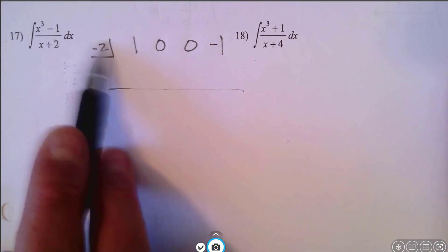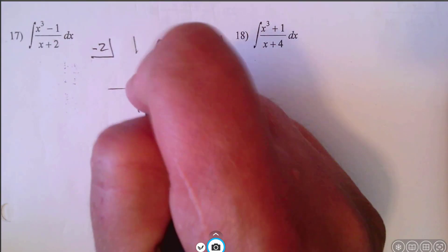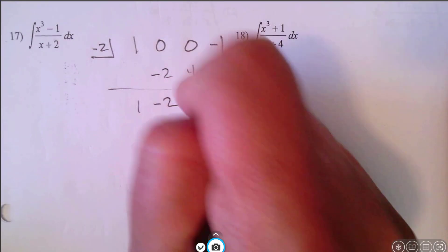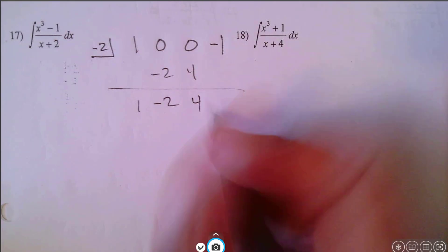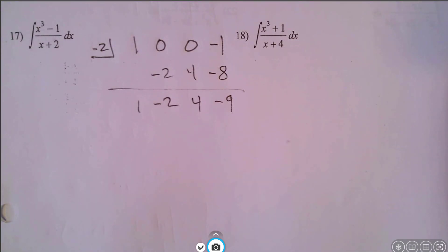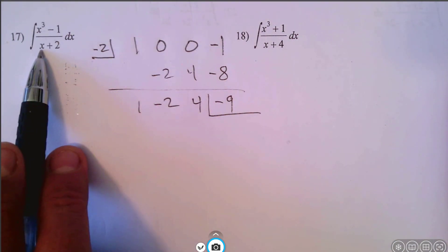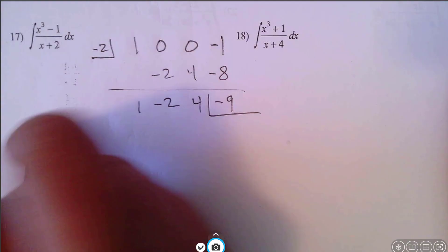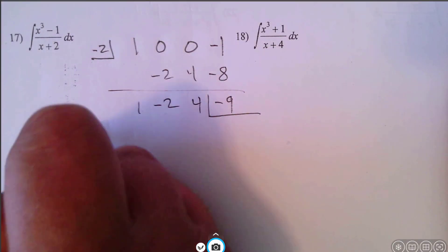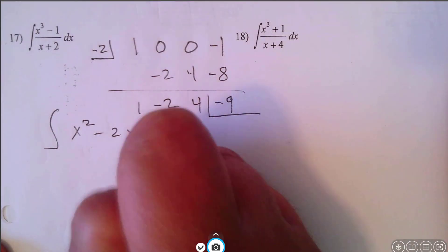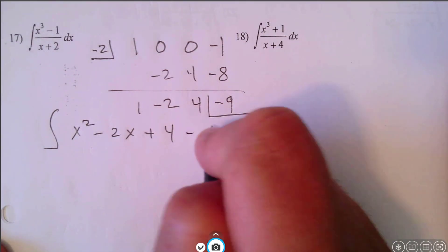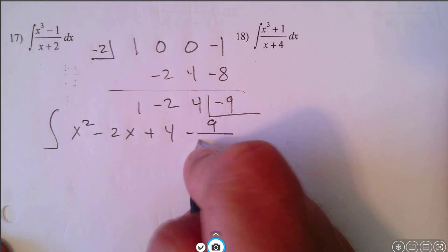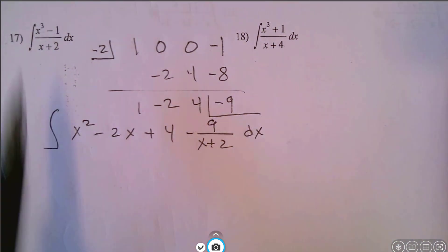If we divide by something higher, then you'll probably have to do long division, but this is going to work out for us. So now we do the same thing: bring the 1 down, multiply — it's going to be negative 2, add — it's negative 2, multiply — it's going to be 4, add — it's 4, and that's going to give you negative 8, and it looks like that is negative 9. The negative 9 is going to be the remainder; I usually box that off. Remember that when you divide by x to the 1, it's going to go down by 1 degree. So if you started out with a cubic, now we end up with a quadratic. We can rewrite the integral as 1x squared minus 2x plus 4, and then the remainder would be negative 9 over the divisor, which was x plus 2, dx.